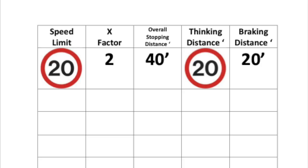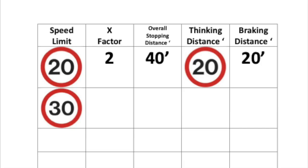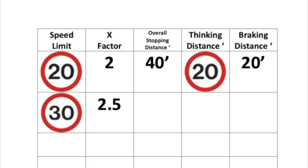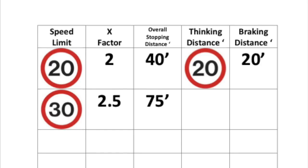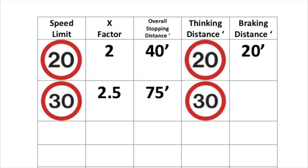Next we move on to 30 miles an hour. The x factor at 30 miles an hour is 2.5. So we multiply 30 miles an hour by 2.5 and that gives us an overall stopping distance of 75 feet. Remember, the thinking distance is always equal to the speed limit, so 30 feet. So 75 feet take away 30 feet equals a braking distance of 45 feet.